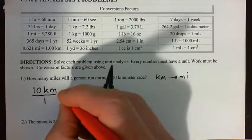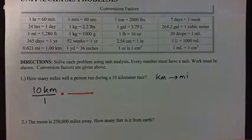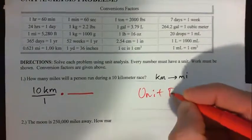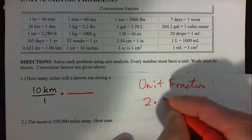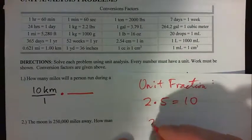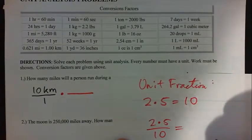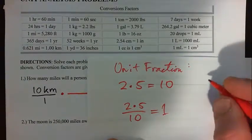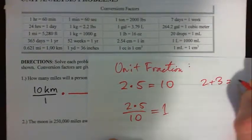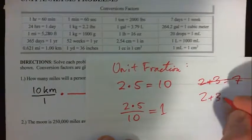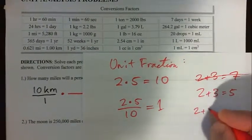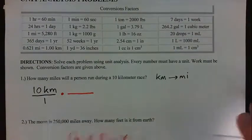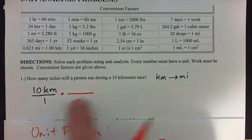Then we multiply it by a unit fraction. A unit fraction is simply a fraction where the top and bottom are the same. For example, we know that 2 times 5 equals 10, so 2 times 5 divided by 10 equals 1. Here's another example: 2 plus 3 equals 5, so 2 plus 3 over 5 equals 1, because both sides are equal. So we find a conversion factor from the list.